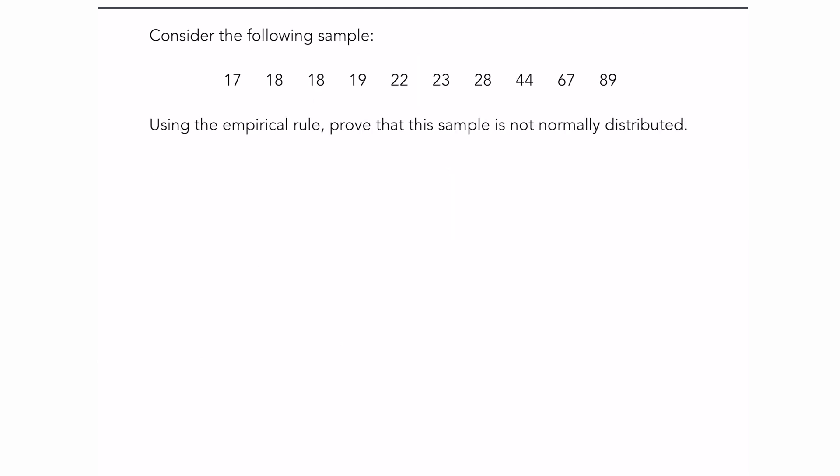The last question is asking you to prove that the sample is not normally distributed using the empirical rule. So for this we're going to need the average, which we had found earlier as 34.5, and the standard deviation, which we had found before to be 24.807. And the empirical rule states that 68% - approximately 68% - of a sample's sample points should be within one standard deviation of the mean. So if I take the mean, 34.5, and I add and subtract one standard deviation...